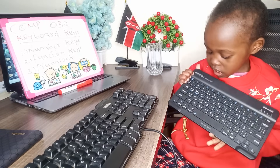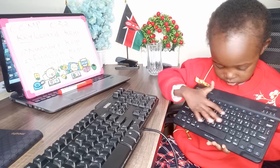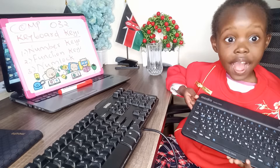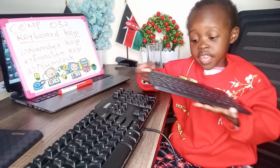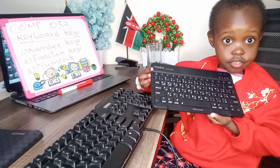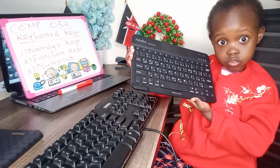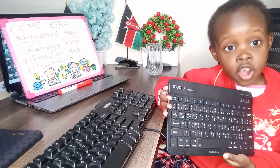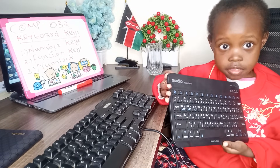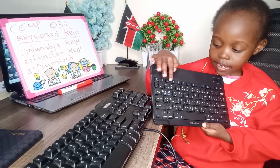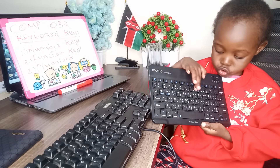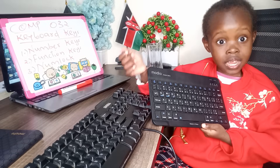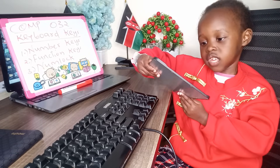Alphanumeric keys — the letters are the alphabet, A to Z. And the numeric part, the numbers, go from zero to nine.